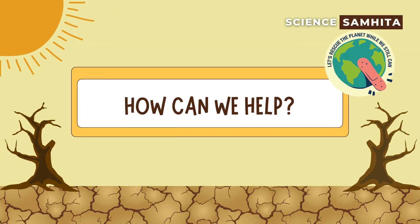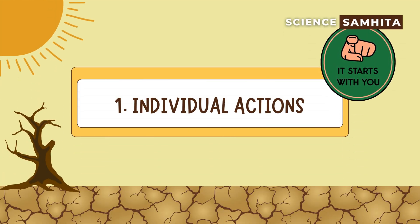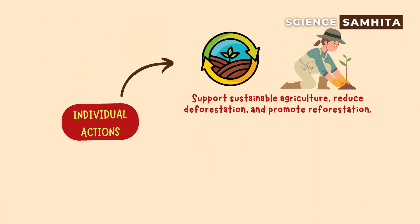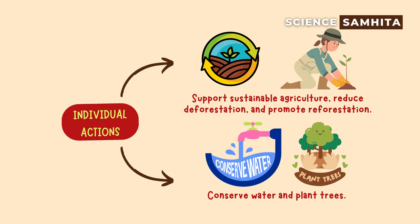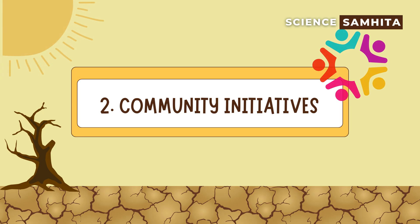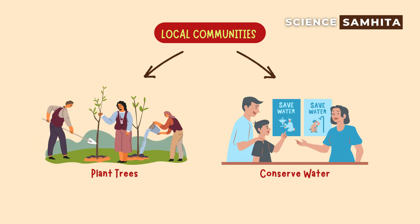How can we help combat desertification? First, individual actions: support sustainable agriculture, reduce deforestation, promote reforestation, conserve water, and plant trees. Second, community initiatives: local communities can plant trees and conserve water to combat desertification.